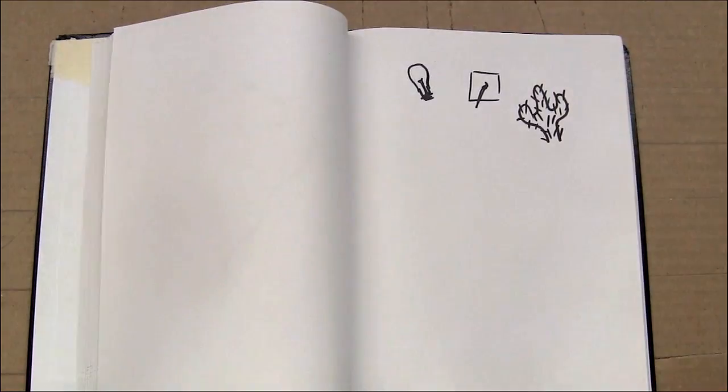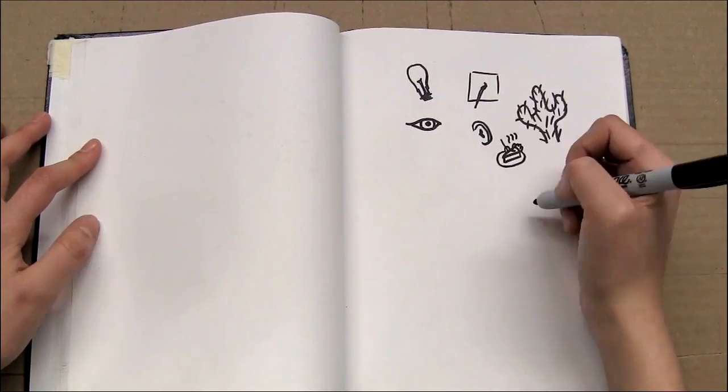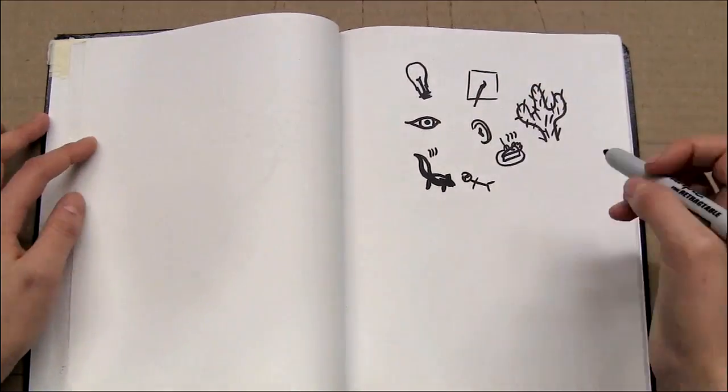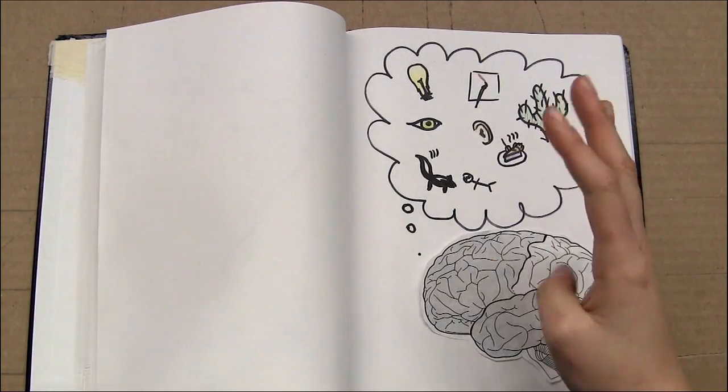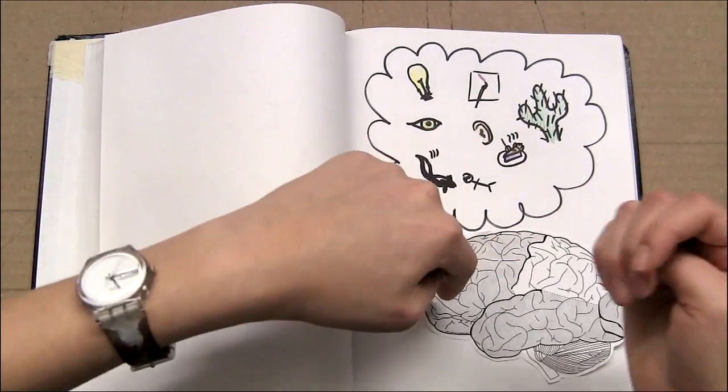So I can breathe, sleep, and feel fear. But what about thinking, planning, feeling, seeing, hearing, smelling, tasting, and understanding the world? All of these things are done by the cortex, which is the biggest part of the brain. In humans, it's located here.